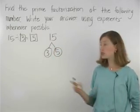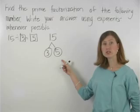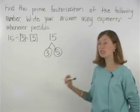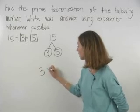Since we have circles at the bottom of all of our branches, we're finished. So the prime factorization of 15 is 3 times 5.